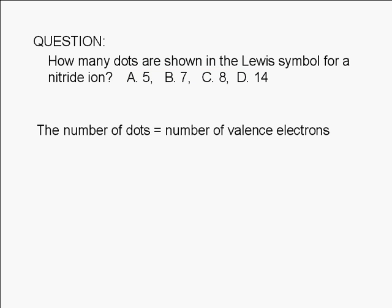The number of dots shown in the Lewis symbol for an atom is equal to the number of valence electrons. Valence electrons are the electrons in the outermost shell of the atom.